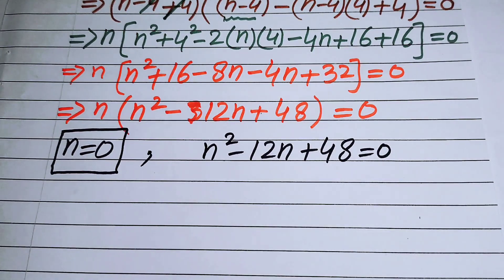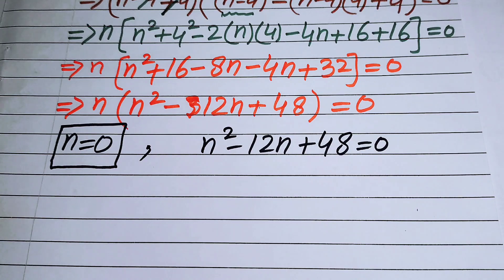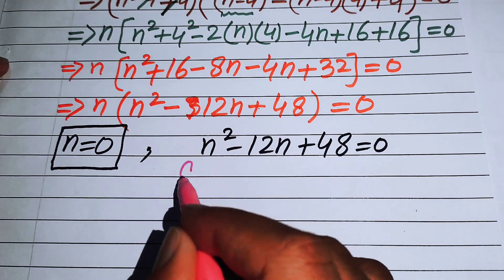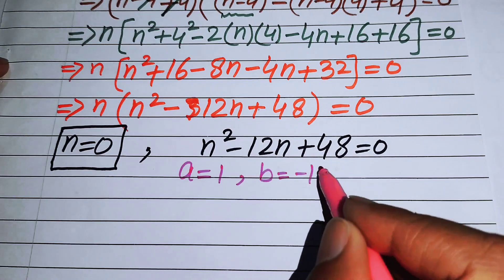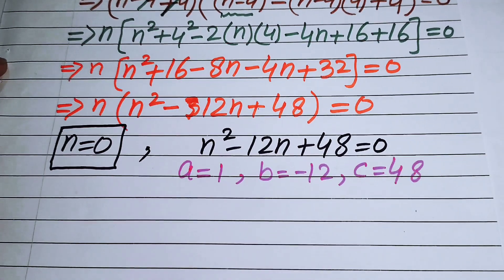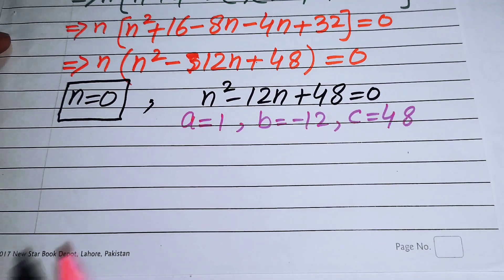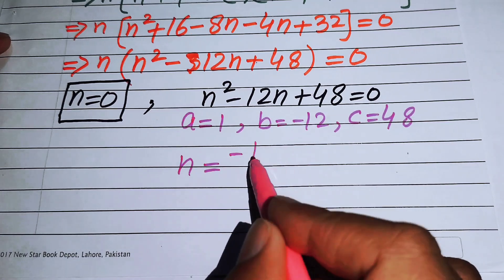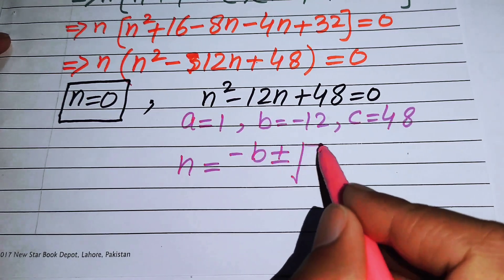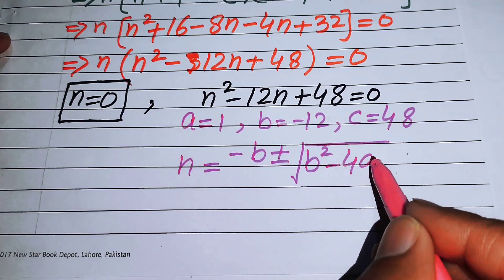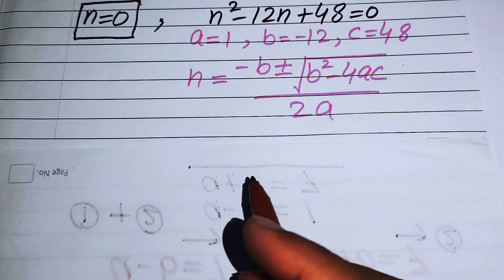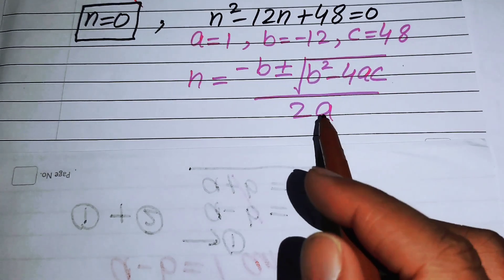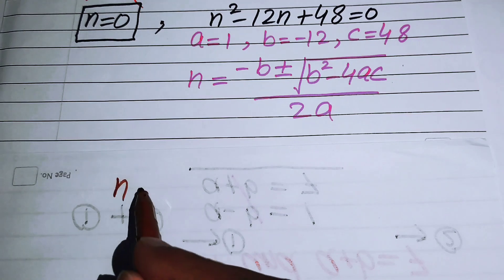We apply the quadratic formula to solve this equation. The coefficients are a = 1, b = -12, and c = 48. The quadratic formula gives n = (-b ± √(b² - 4ac)) / (2a). We now put all the values of a, b, and c into this formula.